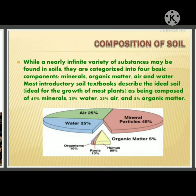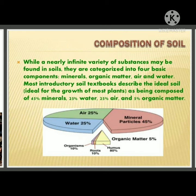Composition of soil: while a nearly infinite variety of substances may be found in soil, they are categorized into four basic components — minerals, organic matter, air, and water. Most introductory soil textbooks describe the ideal soil for the growth of most plants as being composed of 45% mineral, 25% water, 25% air, and the remainder organic matter.